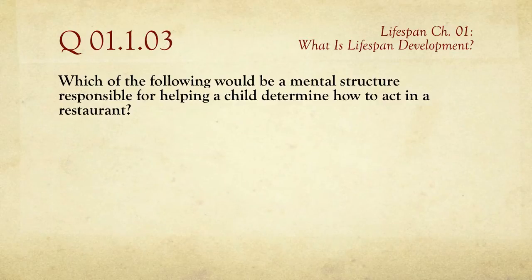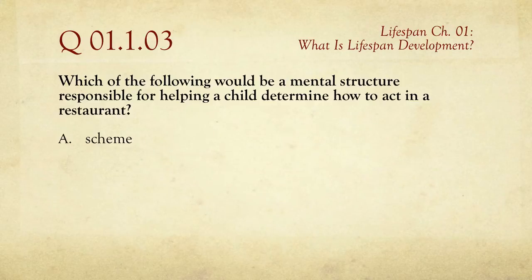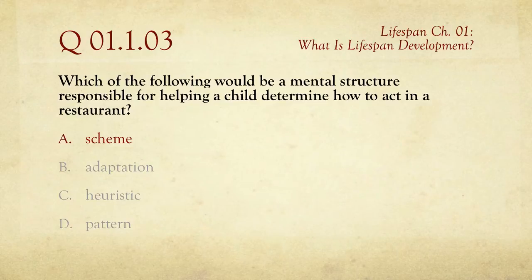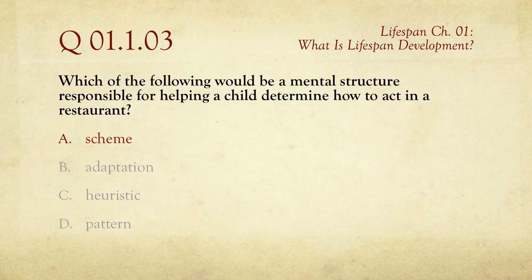Question three: Which of the following would be a mental structure responsible for helping a child determine how to act in a restaurant? The choices are A, scheme; B, adaptation; C, heuristic; or D, pattern. The answer is A, a scheme — sometimes also called a schema. A scheme is an organization of knowledge: you walk into the restaurant, sit at the table, wear certain clothes, talk a certain way. It's an organization of mental knowledge.